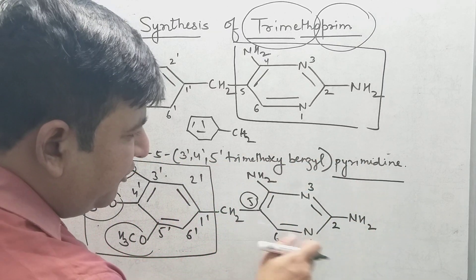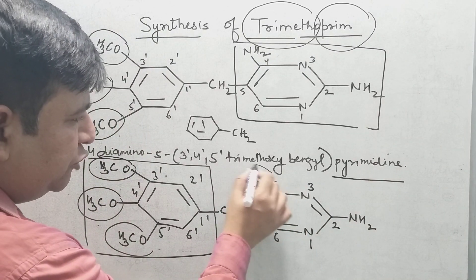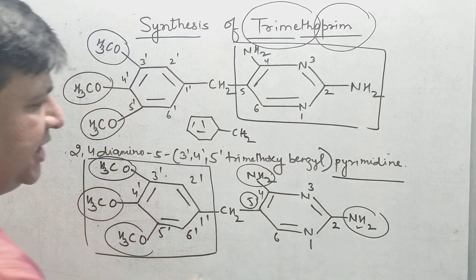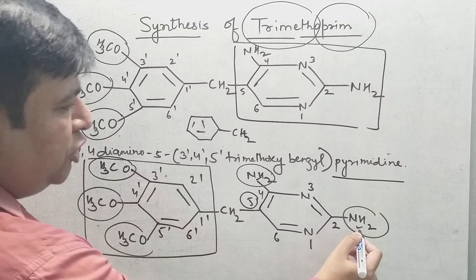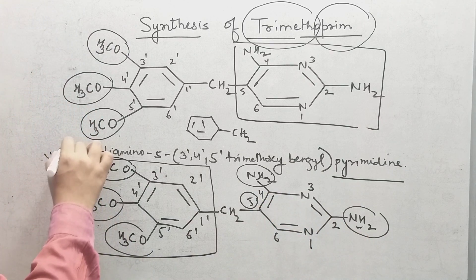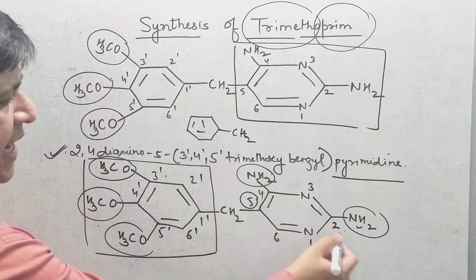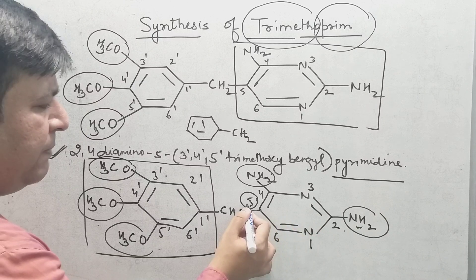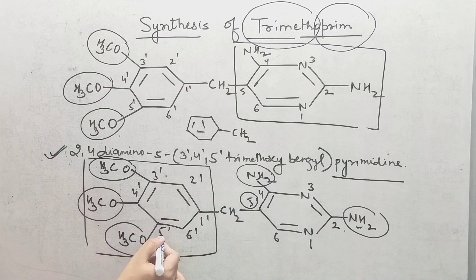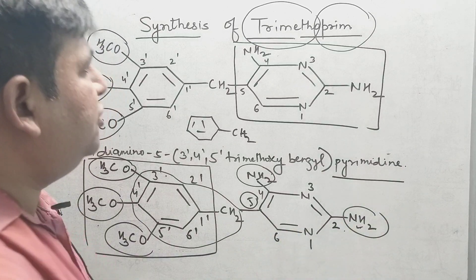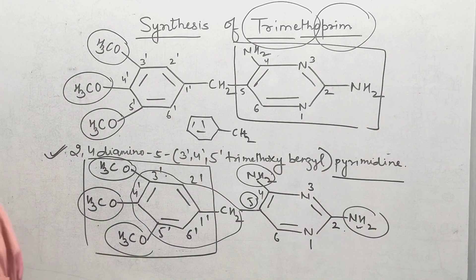At the second and fourth positions there are two amino groups, so the prefix is 2,4-diamino. The full IUPAC name is 2,4-diamino-5-(3,4,5-trimethoxybenzyl)pyrimidine. Now I will discuss the synthesis of trimethoprim.